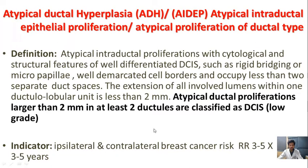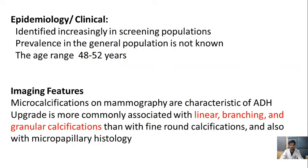Atypical ductal hyperplasia is associated with an increased risk of ipsilateral and contralateral breast cancer, with a relative risk of 3 to 5 times following 3 to 5 years compared to the average population. Atypical ductal hyperplasia is increasingly identified in the screening population; however, the prevalence in the general population is not known, and the average age of diagnosis is 48 to 52 years. On mammography, it is visualized as microcalcifications, which are characteristic for atypical ductal hyperplasia.